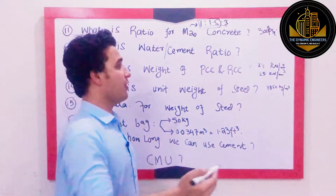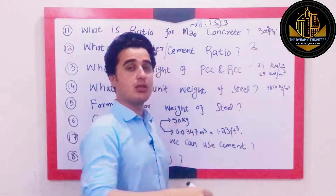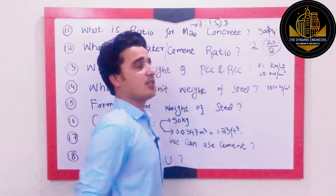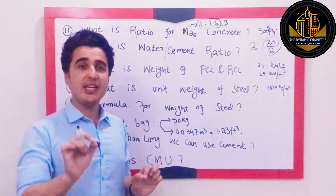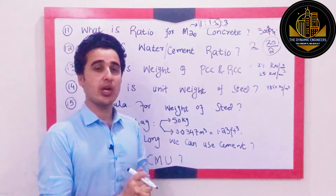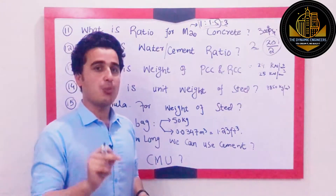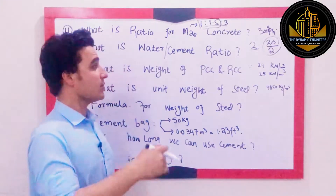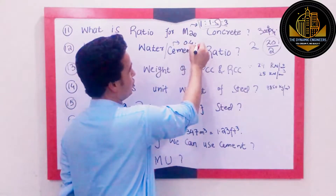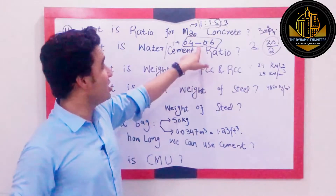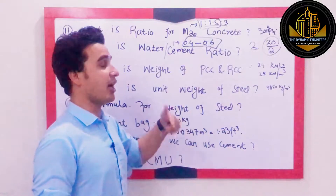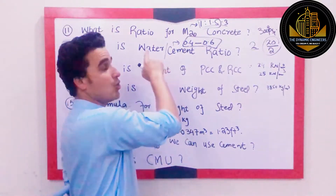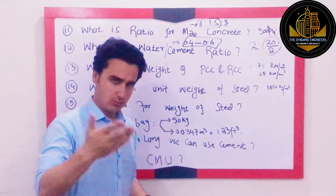For example, if you are using two bags of cement and 20 gallons of water, the ratio will be 20 gallons to two bags. It is defined as the weight of water to the weight of cement, or the volume of water to the volume of cement in a concrete mix. Normally the value ranges from 0.4 to 0.6, and higher water cement ratio results in lower strength.